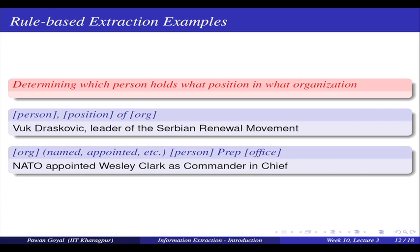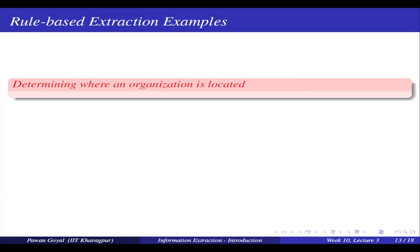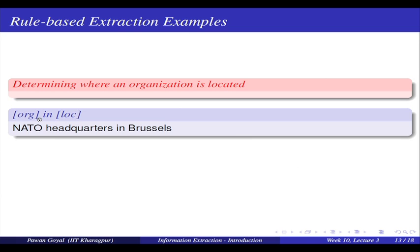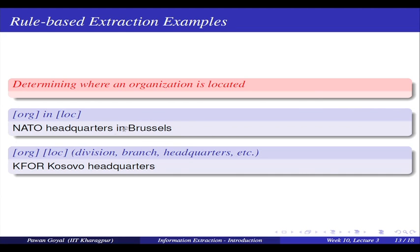Another pattern: organization named appointed person preposition office. For example: 'NATO appointed Vassily Clark as commander in chief.' Again you are finding all three entities in a particular relation. Similarly, suppose your task is to find out where an organization is located. You will think of patterns like 'X located in Y' or 'Y is X's headquarters.' Using these patterns you extract pairs like organization-location - NATO headquarters in Brussels - extracting NATO headquarters and Brussels as the two entities.